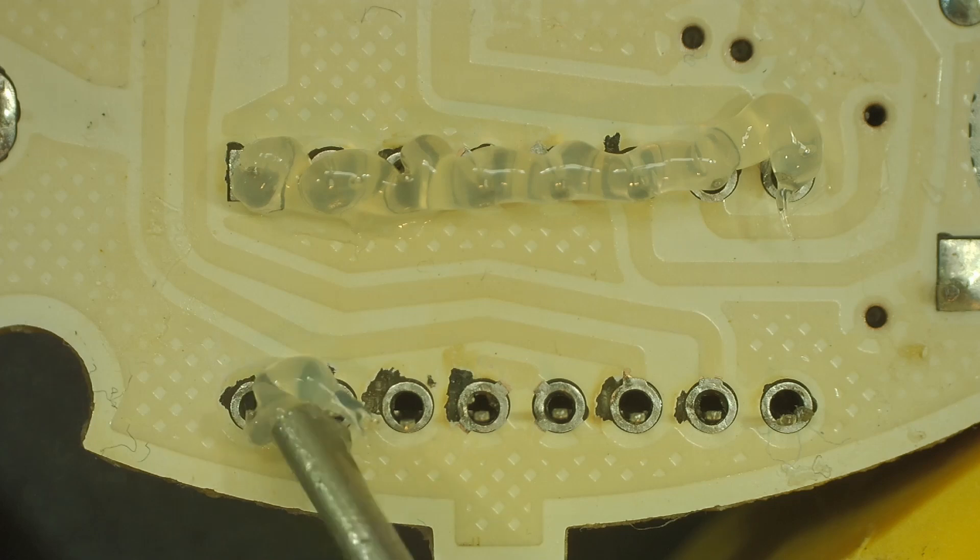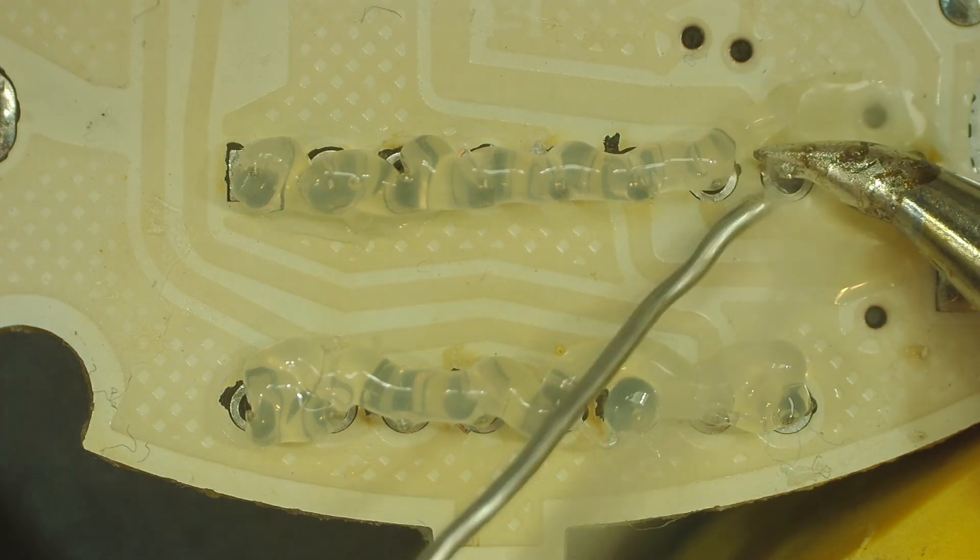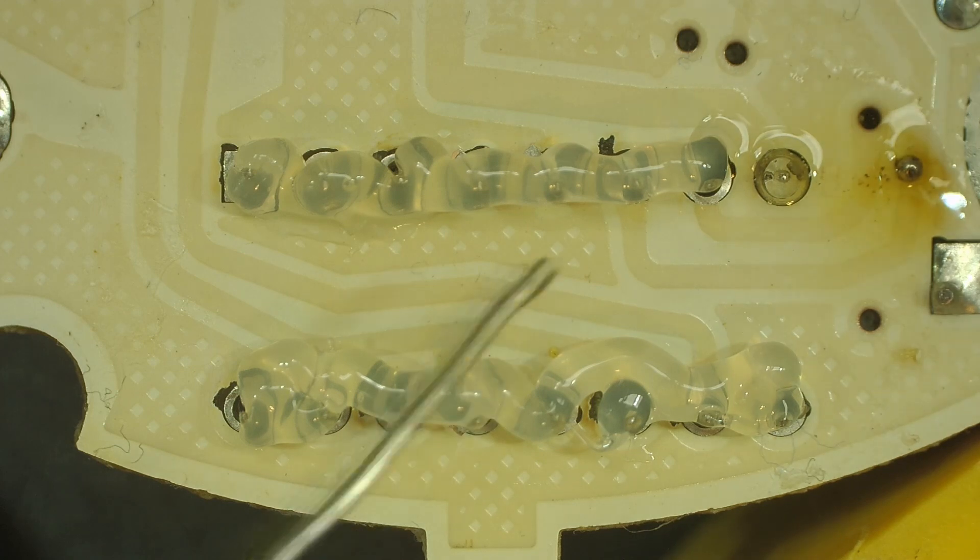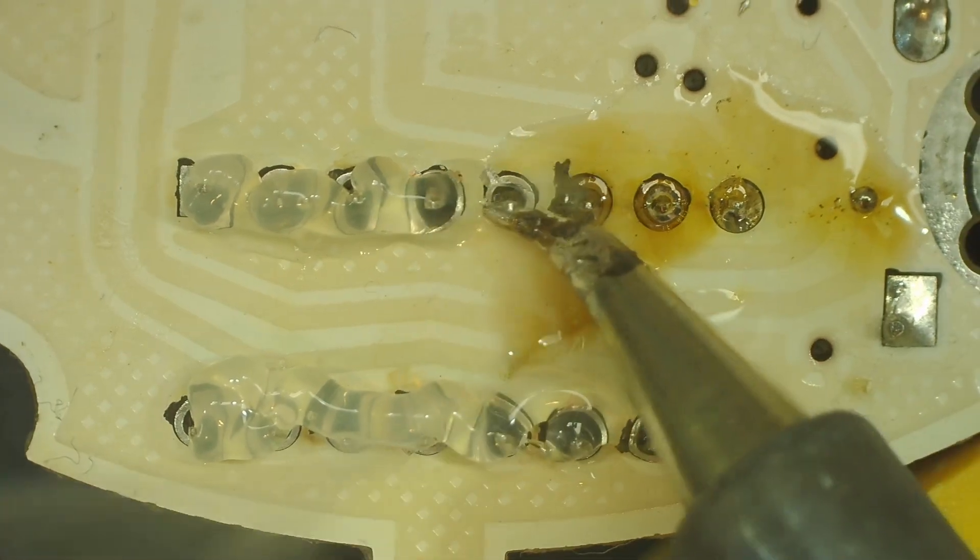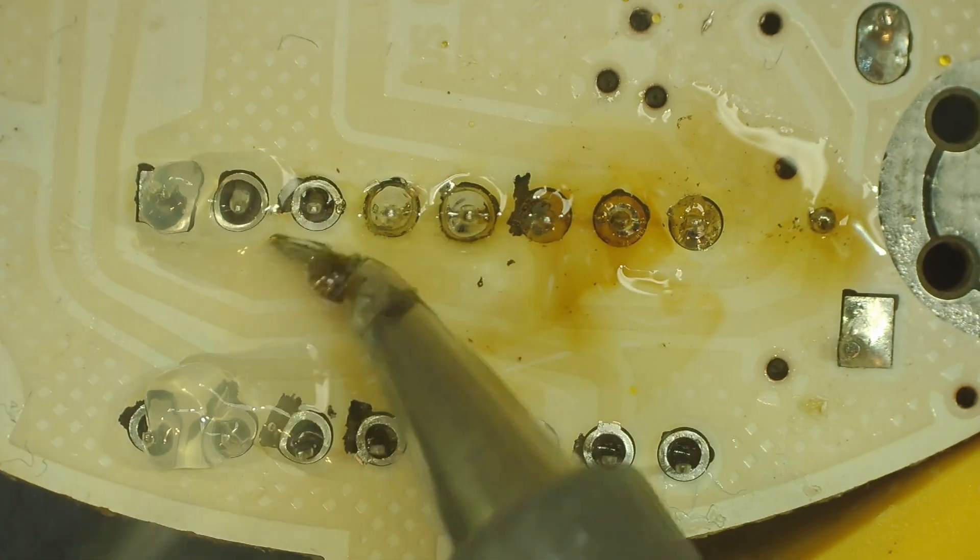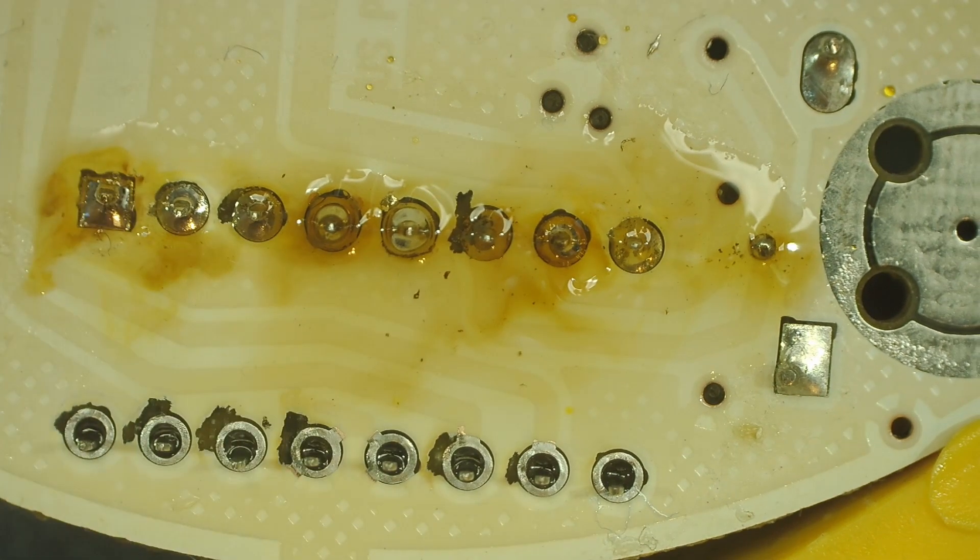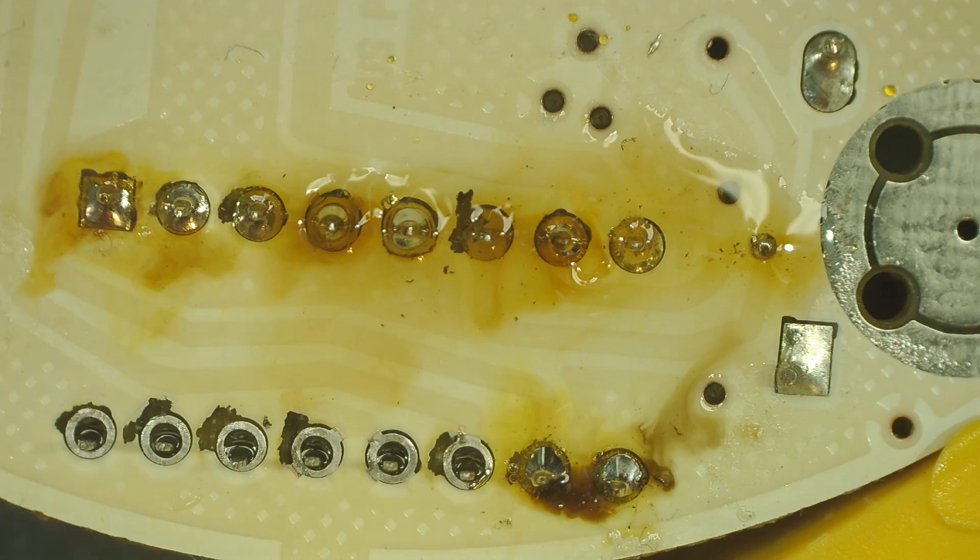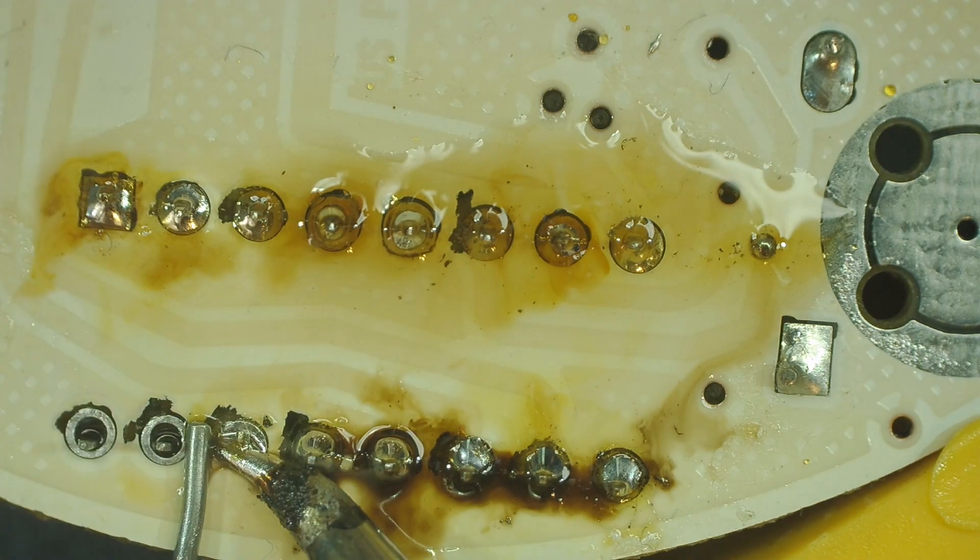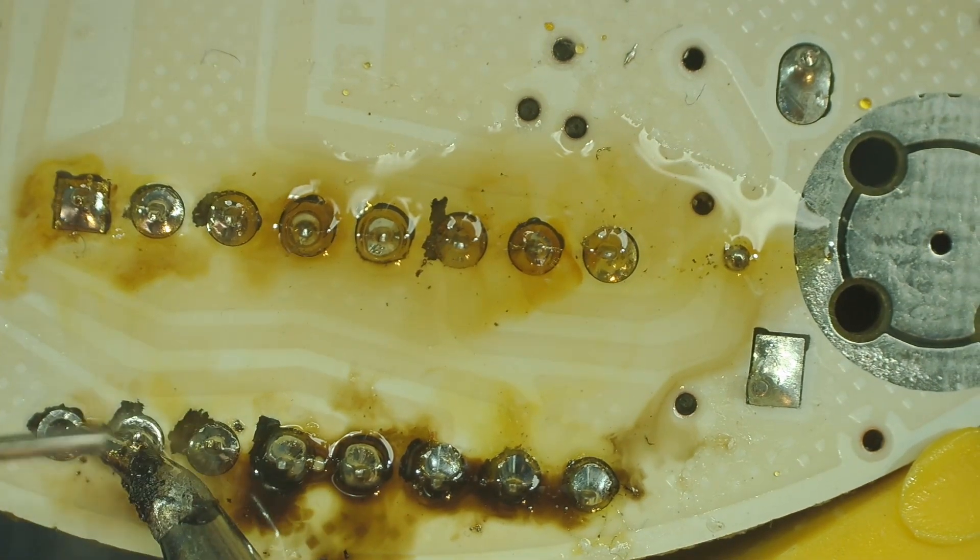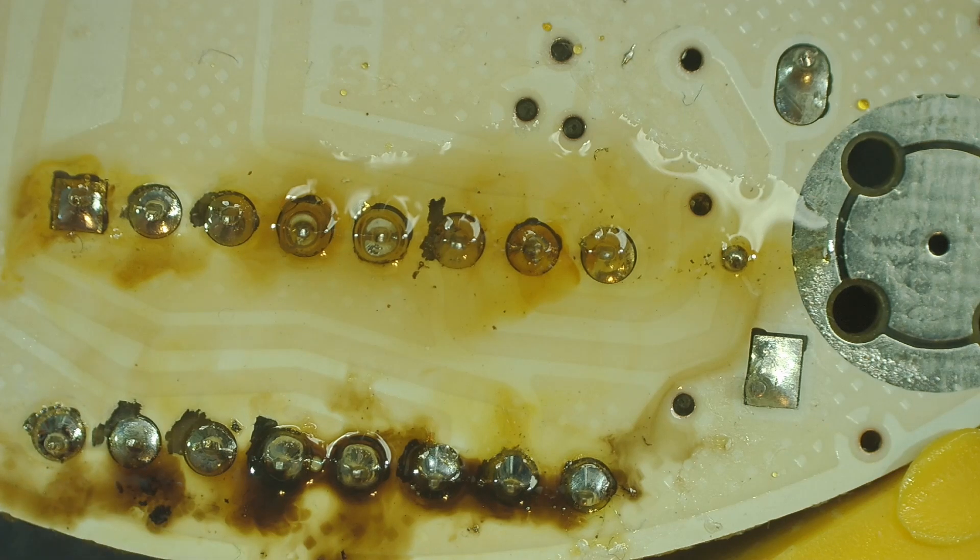Amtech flux here. Just using our regular leaded rosin core solder here. I'll speed this up so you don't have to watch the whole thing. And this Amtech flux, it helps the solder flow so beautifully. Got that last little piece in there, let's pull it on in. And there we go, let's do a little cleanup.